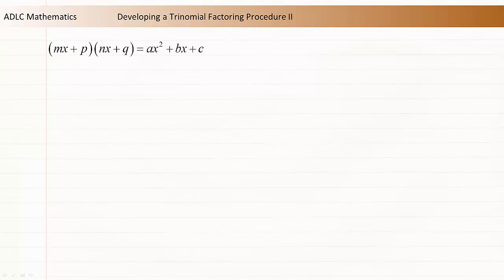You may have noticed that multiplying binomials of the form mx plus p times nx plus q results in a trinomial of the form ax squared plus bx plus c. Just as before, we'll look in detail at the multiplication of these binomials to see if a pattern emerges that can be used to factor a trinomial of the form ax squared plus bx plus c.